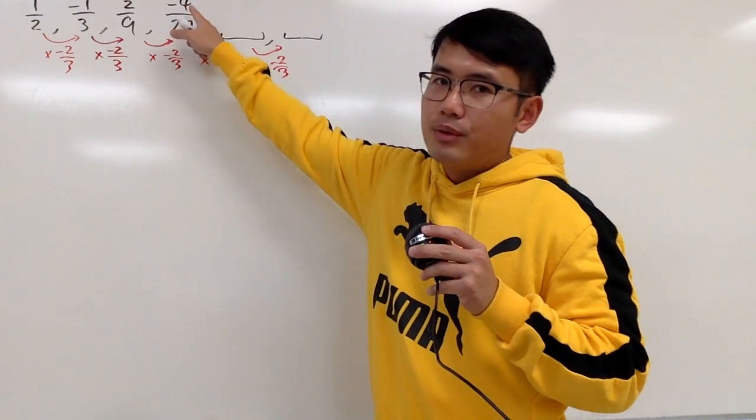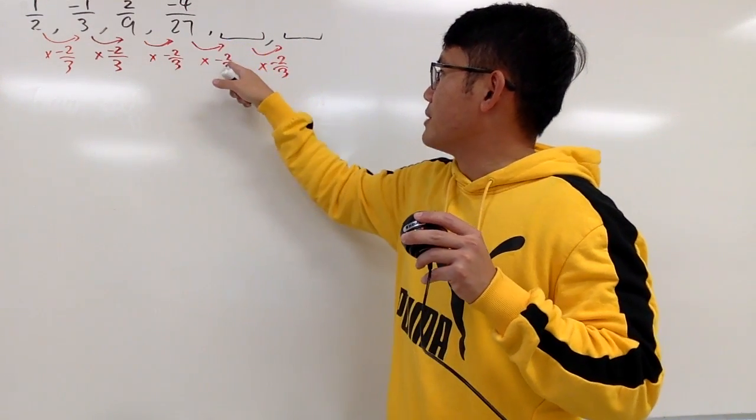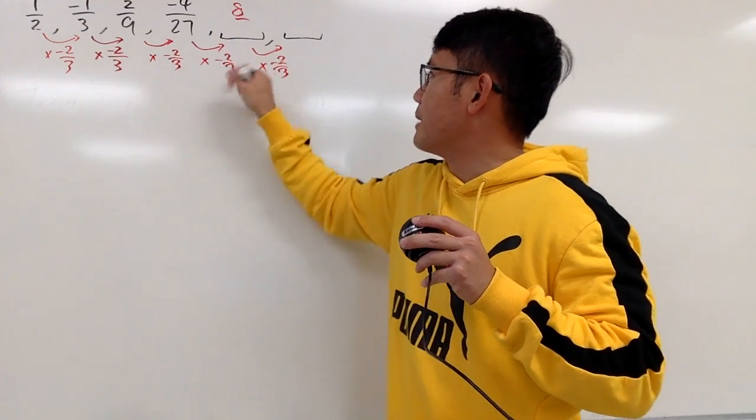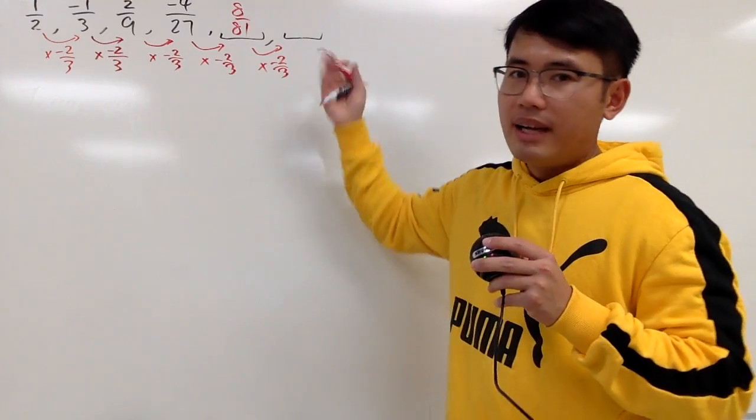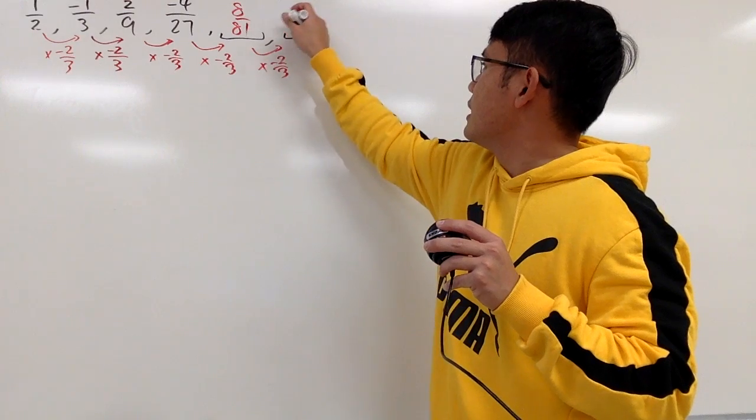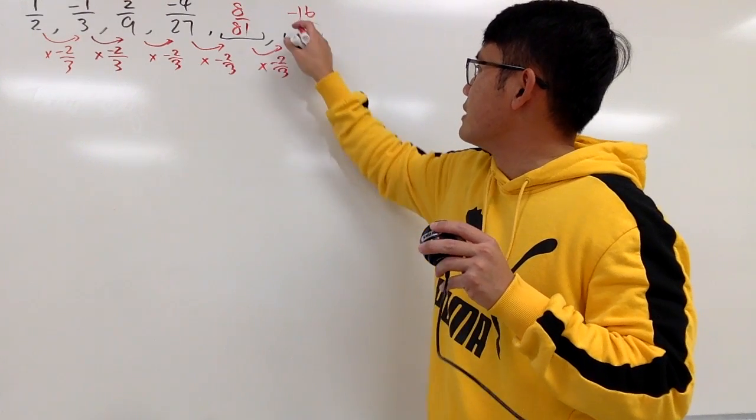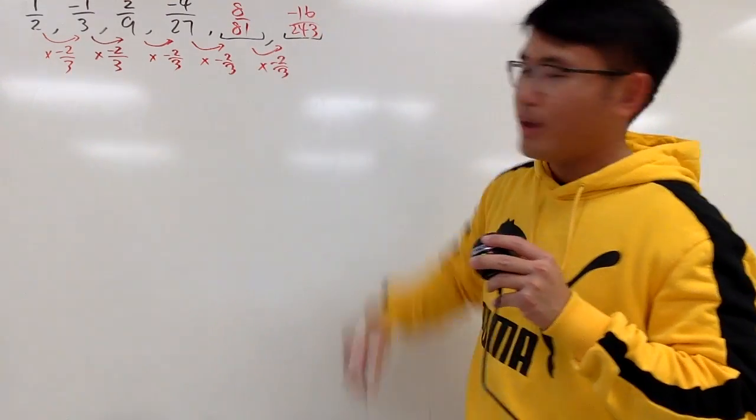Anyway, to figure this out, you just multiply -4 times -2, you get positive 8 over 27 times 3, which is 81. And then for this one, 8 times this is -16 over 81 times 3, which is 243. So we are done.